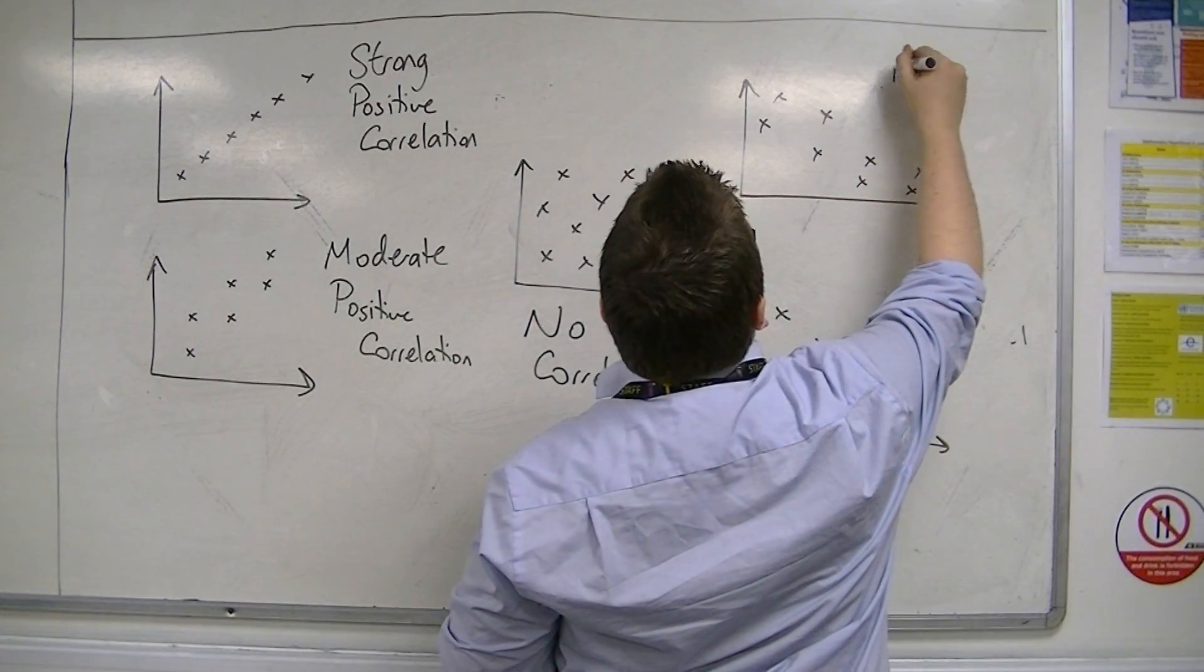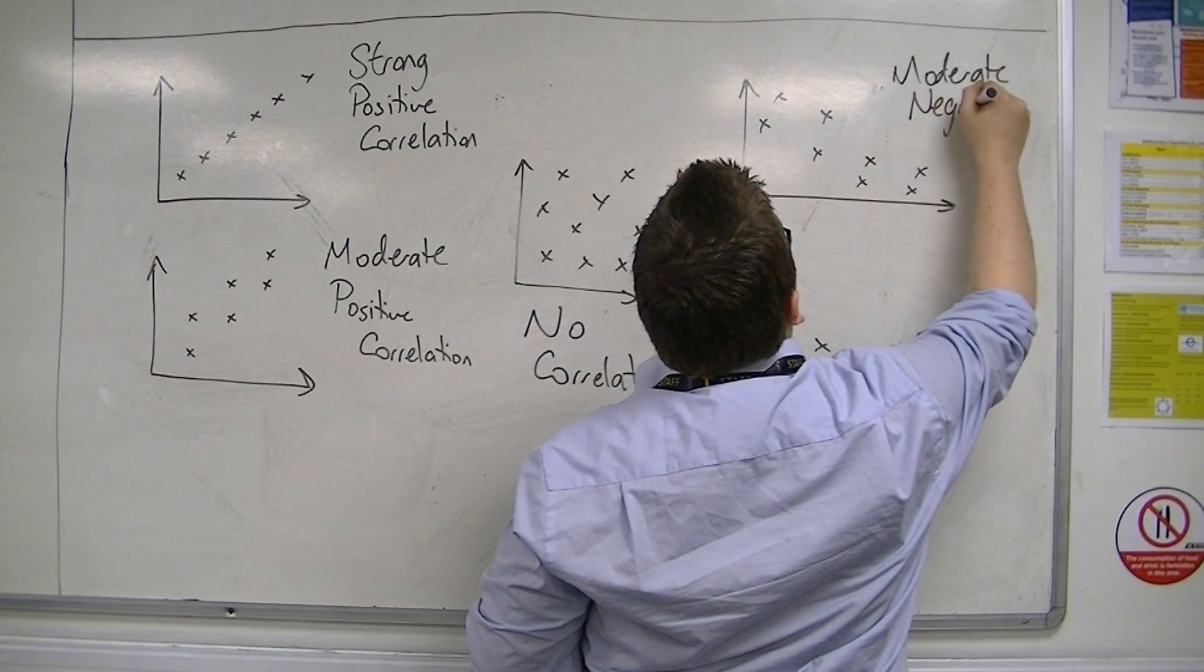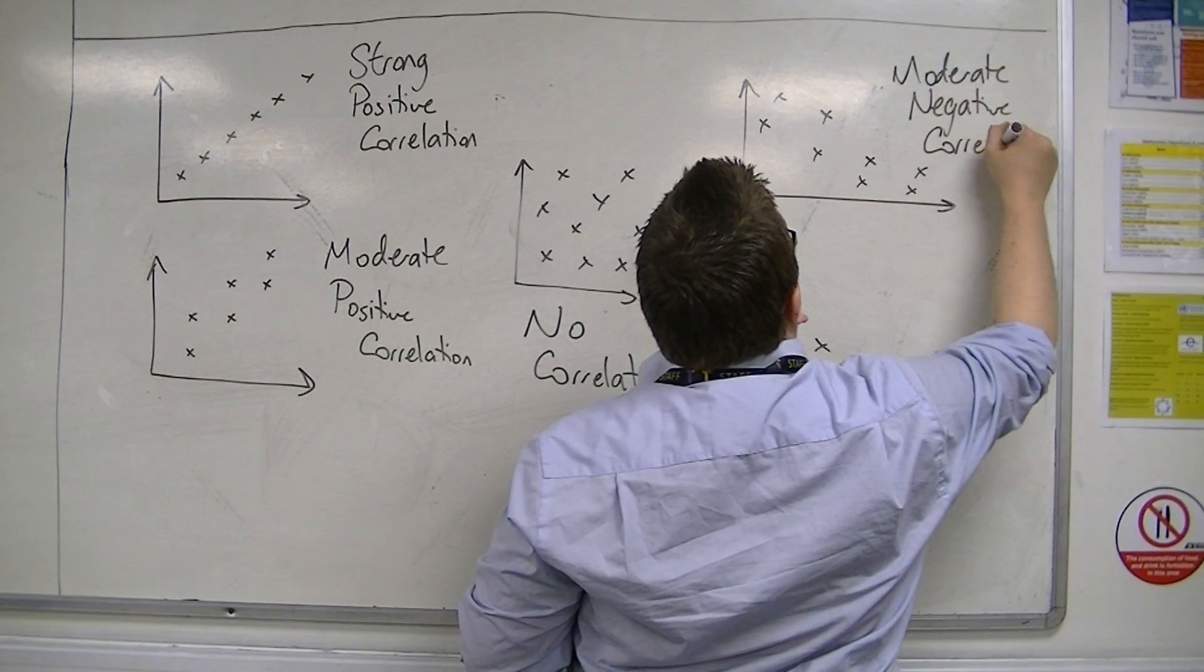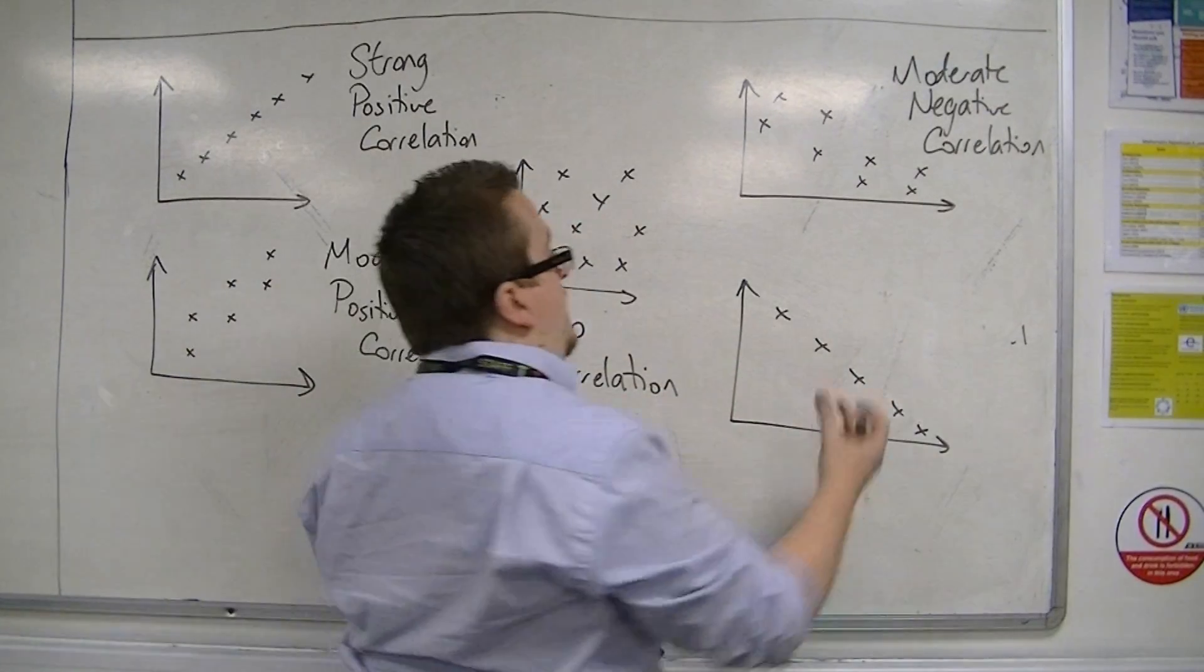So this would be a moderate negative correlation. And this would be a strong negative correlation.